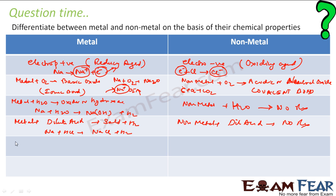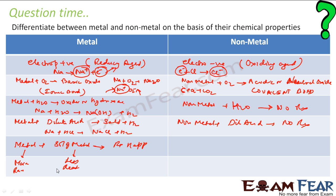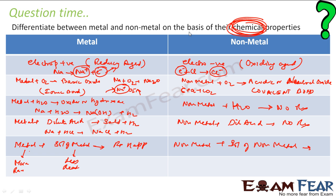Now let us talk about the displacement reaction. When a metal reacts with a solution of another metal salt, a reaction happens based on reactivity — if the first metal is more reactive than the second, the displacement reaction occurs. Similarly, non-metals can react with a solution of another non-metal salt, and if the non-metal is more reactive, displacement happens.